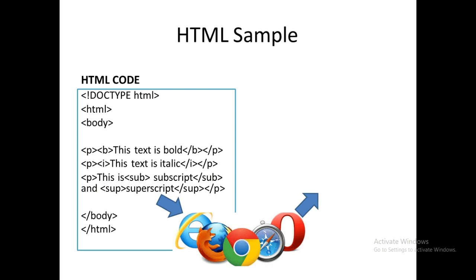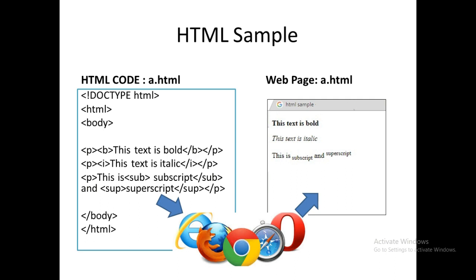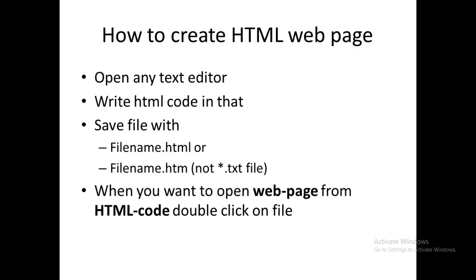This is an HTML sample — when this code is given to any browser, the browser converts it into a web page. We use browsers daily; some examples are Internet Explorer, Chrome, Mozilla Firefox, and Safari. To create an HTML web page, we need text editors. Text editors are software which can save text.